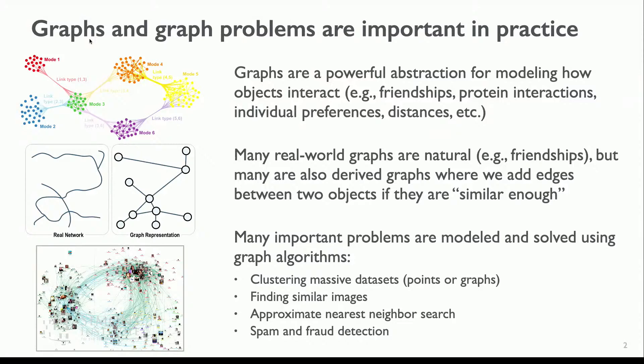There are many important problems with graphs. Some of the more practical ones that people at Google and other companies care about are clustering very large data sets, doing unsupervised learning using graphs produced by notions of similarity, finding similar images or removing duplicates, using graphs to solve approximate nearest neighbor search in very high dimensions, and doing spam, abuse, and fraud detection. These have a lot of real-world impact — people are making billions of dollars, and maybe if you go to industry you can too if you have a good idea.